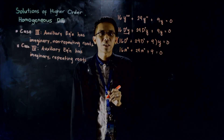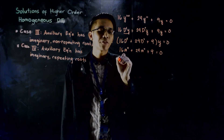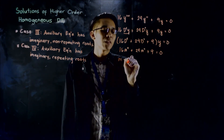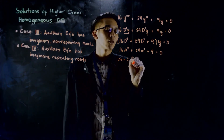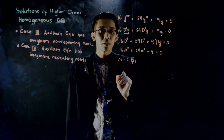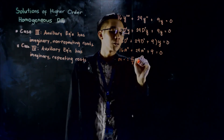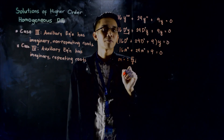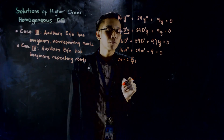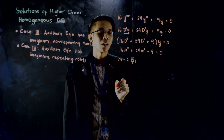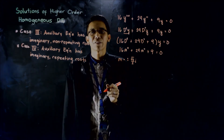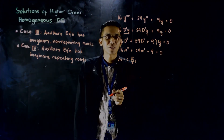Solving for the values of m, you will notice that m equals positive/negative square root of 3 all over 2, times i, having a multiplicity of 2 — meaning we have 4 roots: positive √3/2 · i and negative √3/2 · i, both with multiplicity of 2. So this is case 4 for our higher-order homogeneous differential equation.